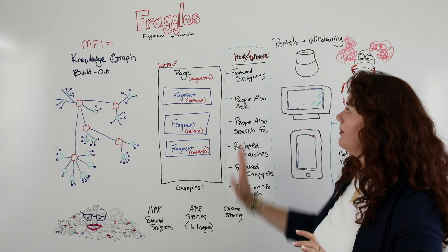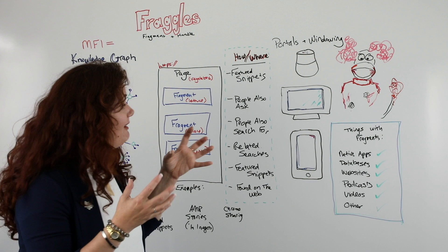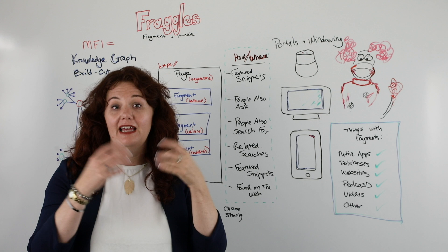Now let's talk about Fraggles. Fraggles, as I said, are a fragment plus a handle. It's important to know that there are lots of things out there that have fragments. You can think of native apps, databases, websites, podcasts, and videos — those can all be fragmented.